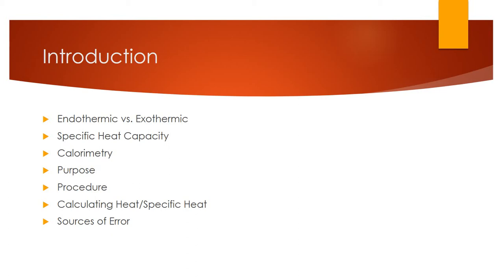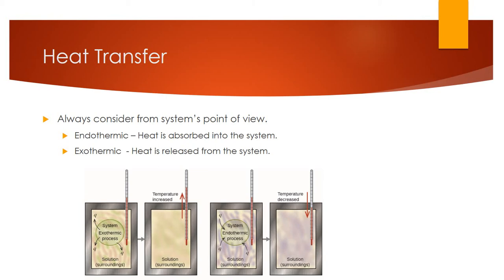When we're talking about heat, we always consider it from the system's point of view. So when we talk about a salt dissolving, we're talking about it from the salt's point of view, not the water's. If something is endothermic — 'endo' sounds like 'into' — heat is absorbed and the temperature will rise. For an exothermic situation, heat is being released, exiting the system.